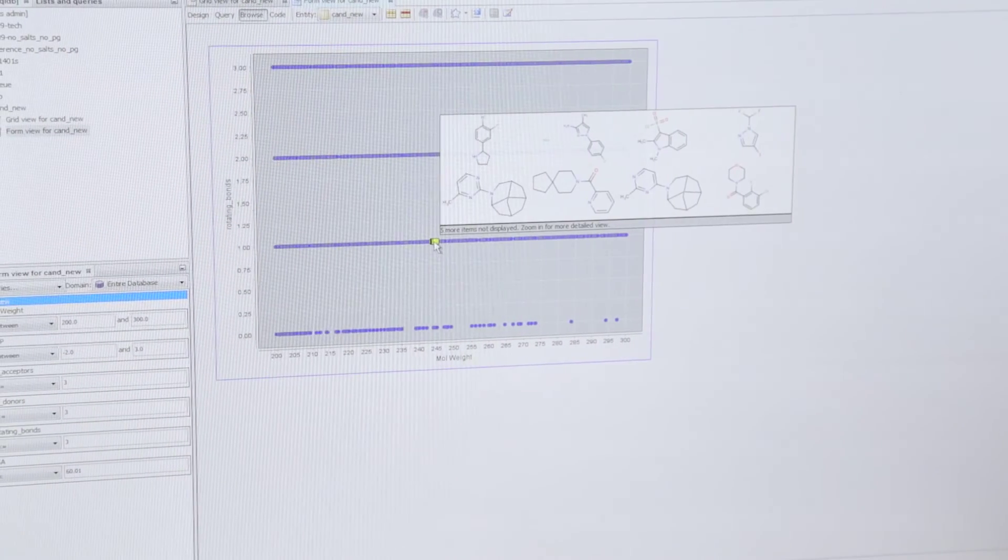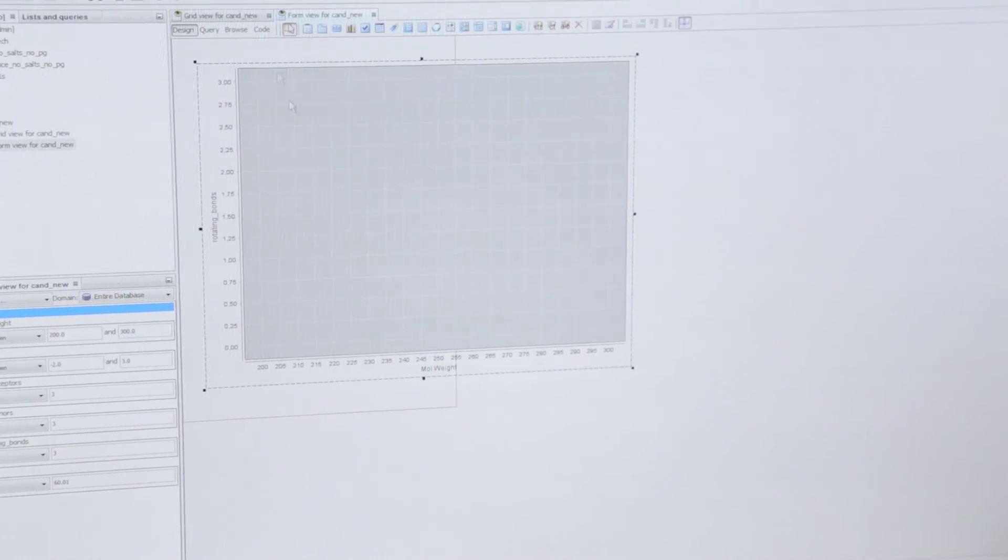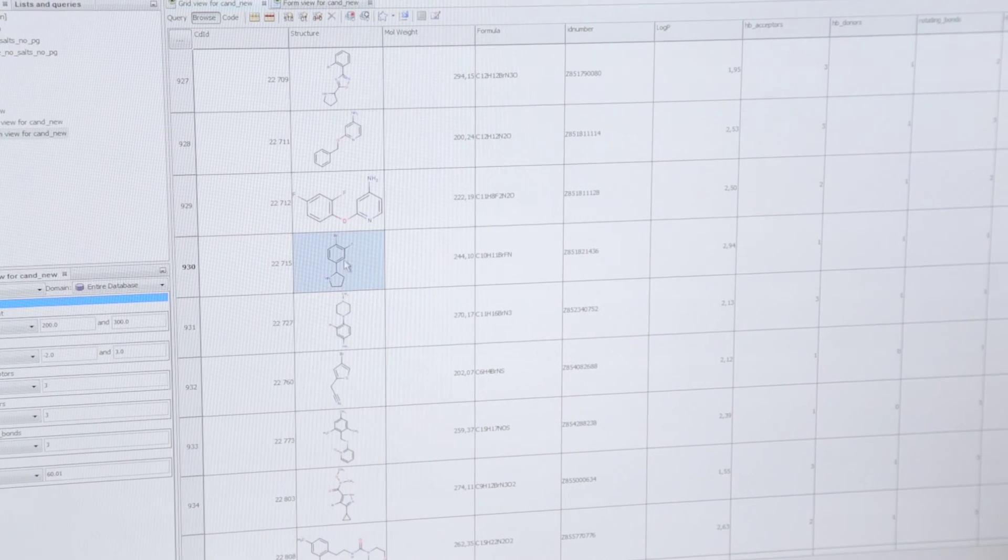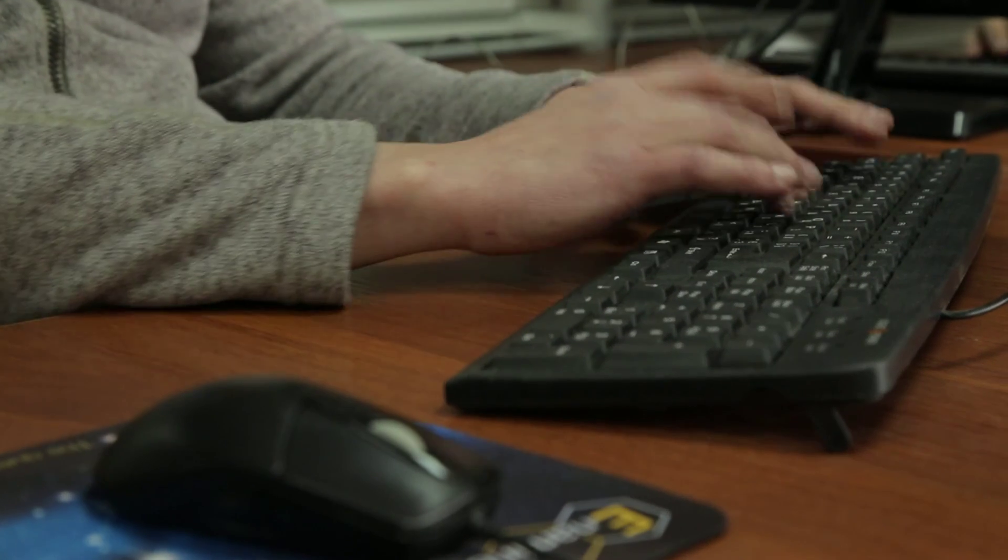Another competitive advantage of Inamine is the strong cheminformatics team. They created our original product, the REAL database, containing millions of highly refined feasible structures. Besides this, the team routinely makes diversity selections, clustering of compound libraries, and scaffold-hopping for our clients.